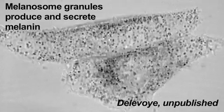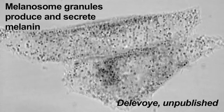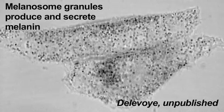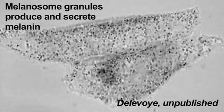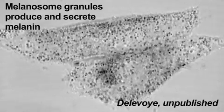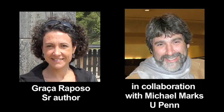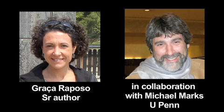Melanocytes, for example, have granules called melanosomes that produce and secrete the pigment melanin in the skin. Grasse Raposo, from the Institut Curie in Paris, France, is interested in how cells like melanocytes adapt their regular transport pathways to generate such dedicated organelles.